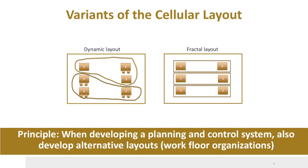Here you see the so-called dynamic layout. Machines can be moved to other cells if it fits better to the mix of the manufacturing orders. Another possibility, if the machines cannot be easily moved from one cell to another, is the design of a fractal layout. In a fractal layout, cells are created in such a way that many product types can be produced in one or more cells. This creates the possibility to cope with mixed flexibility. In general, the way in which the work floor is organized determines the ease of production planning and control.